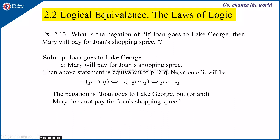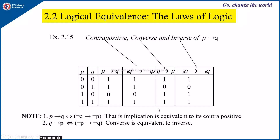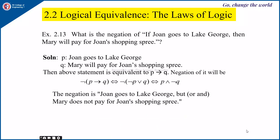Finally, what is the negation of: 'If John goes to Lake George, then Mary will pay for John's shopping spree'? Let P = 'John goes to Lake George' and Q = 'Mary will pay for John's shopping spree.' The statement is P→Q. Its negation is ¬(¬P∨Q), which equals P∧¬Q. In statement form: 'John goes to Lake George but Mary does not pay for John's shopping spree.' We will stop here and continue in the next lecture.